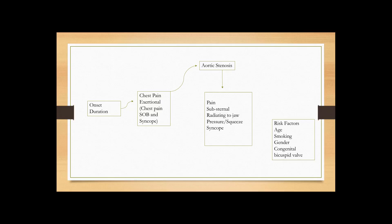What kind of patients develop aortic stenosis? Usually older men, though it can be present in female patients too. Smoking is a major risk factor. Patients with a history of congenital bicuspid valve can also develop aortic stenosis — so this category can include relatively young patients. If a patient already has a known bicuspid valve on echo and now presents with these symptoms, you must think about aortic stenosis.